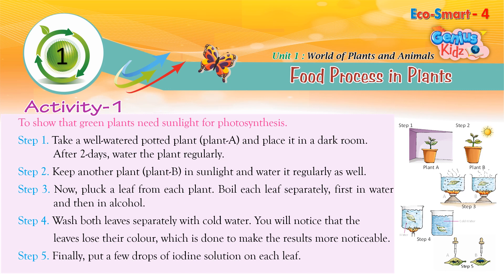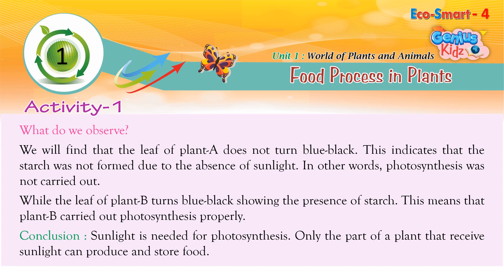Step 3: Pluck a leaf from each plant. Boil each leaf separately, first in water and then in alcohol. Step 4: Wash both leaves separately with cold water. You will notice that the leaves lose their color, which is done to make the results more noticeable. Step 5: Finally, put a few drops of iodine solution on each leaf. We will find that the leaf of Plant A does not turn blue-black.